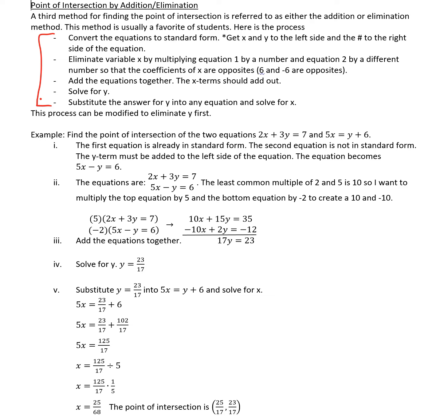Third step, you're going to add the new equations together. The x term should add out at this point, otherwise you need to go back to step 2 and try it again. Then we'll solve for y, and lastly you'll substitute the answer for y back into any equation and solve for x. Now there are times where instead of having the x variable be the variable that you try to add out immediately, the y variable might be easier, and so this process can be modified where you eliminate y first.